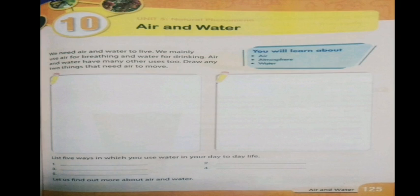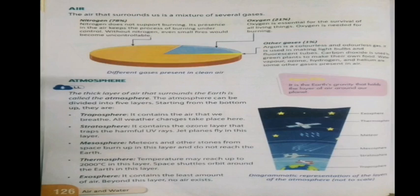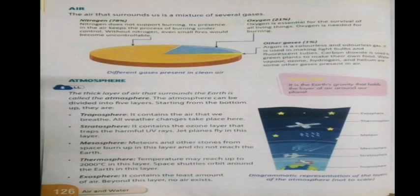Let's start with air. The air that surrounds us is a mixture of several gases. 78 percent of the air is nitrogen gas — it does not support burning and keeps the process of burning under control. 21 percent of air is oxygen, which is needed by all living things and is also needed for burning. The remaining 1 percent contains other gases like argon, carbon dioxide, and water vapor.